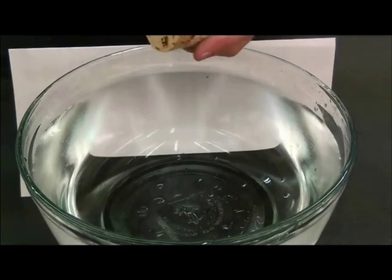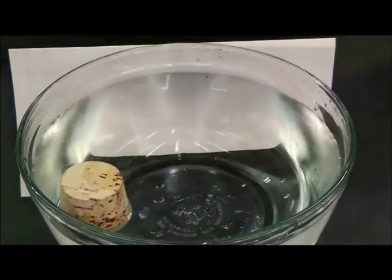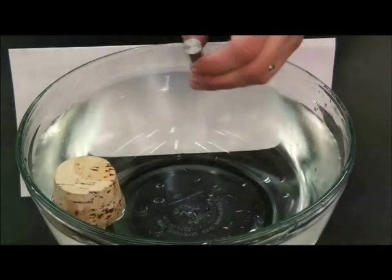One interesting demonstration of surface tension is whether or not an object will float. You know that an object like a cork floats in water because it is less dense than the water.